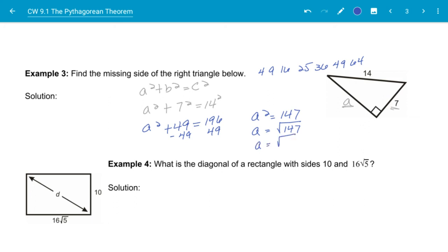I get the square root of 49 times 3. So I can go ahead and take the perfect square out and say the square root of 49 is 7, and that leaves me square root of 3. So A is equal to 7 square root of 3 is the measurement of that leg.